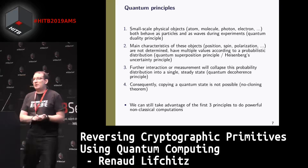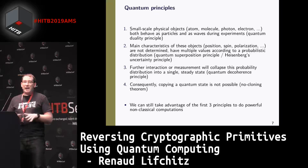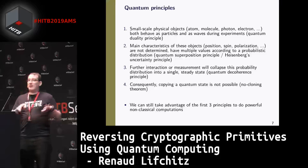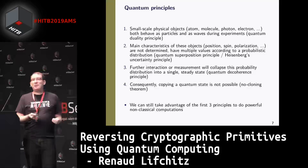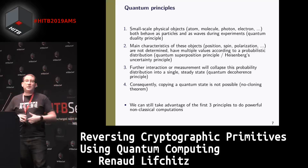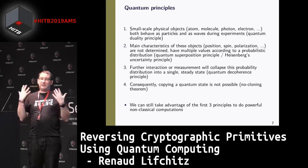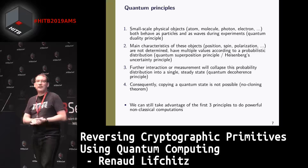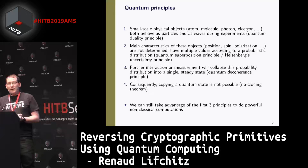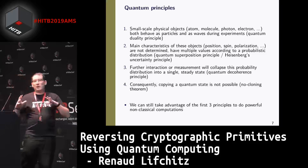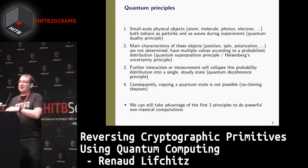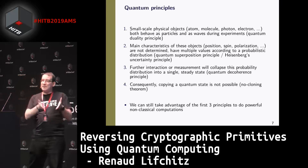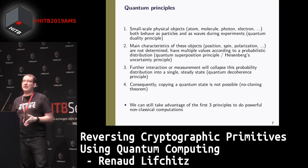Another key characteristic of quantum objects is that their main properties are not defined when they are created. A particle has no position and no speed until you measure it. They have a probabilistic position and probabilistic speed. Once you measure them, this probabilistic function collapses into a single value, and their actual position and speed get defined at that point.